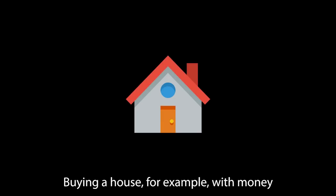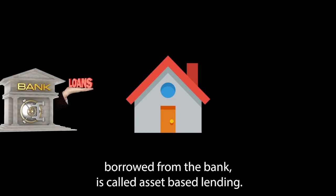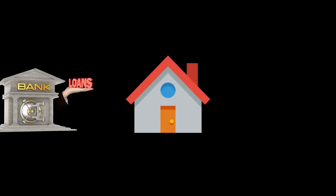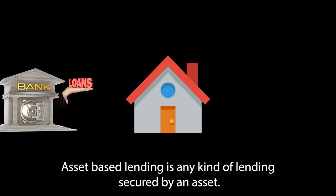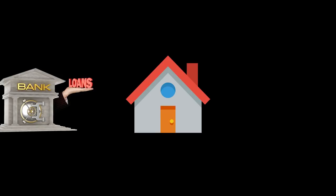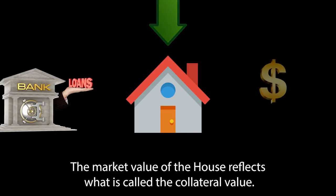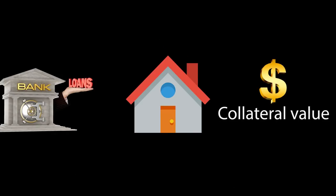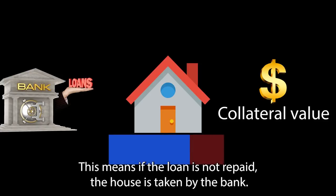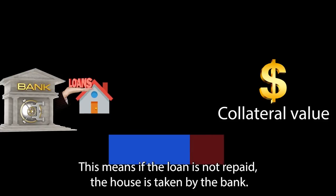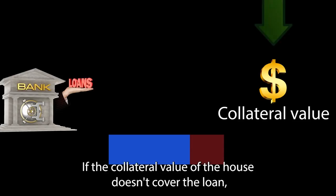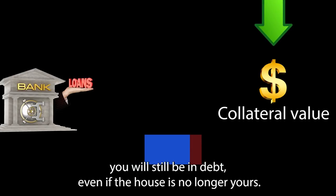Buying a house, for example, with money borrowed from the bank is called asset-based lending — any kind of lending secured by an asset, in this case the house. The market value of the house reflects what is called the collateral value. This means if the loan is not repaid, the house is taken by the bank. If the collateral value of the house doesn't cover the loan, you will still be in debt, even if the house is no longer yours.